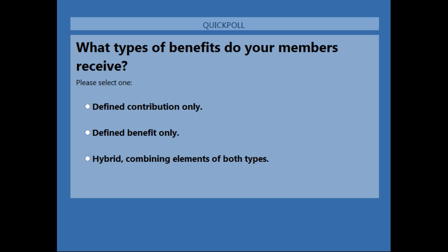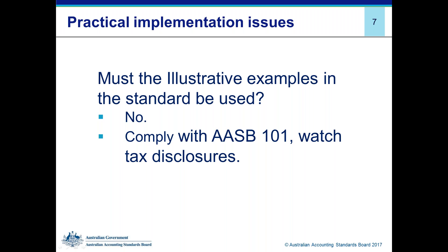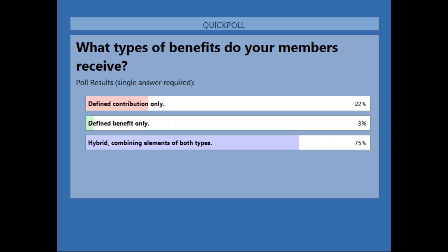The poll results show: defined benefit only is a very, very small number — they're a vanishing breed. Defined contribution only is 20%, and hybrid is three quarters. So those are probably figures we might well have expected. Thank you for your contribution to that poll.